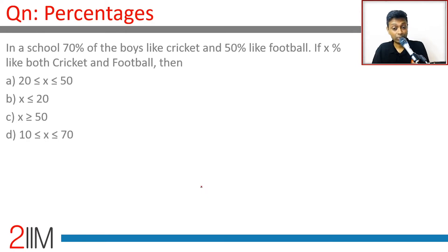70% of the boys like cricket and 50% like football. If x percent like both cricket and football—this is cricket, this is football, x percent like both—then what value can x take?